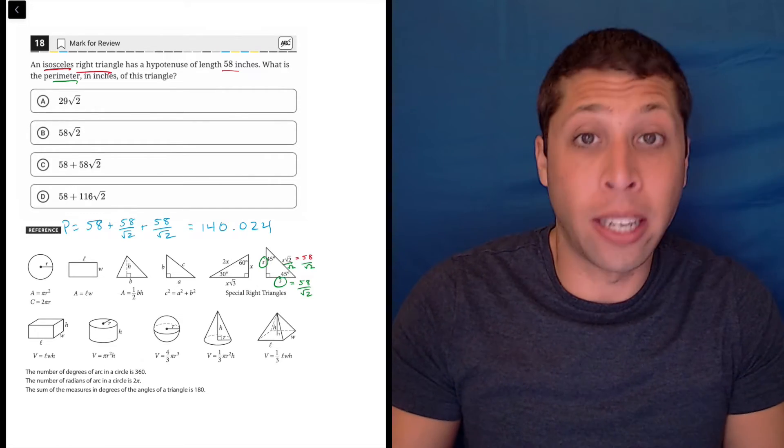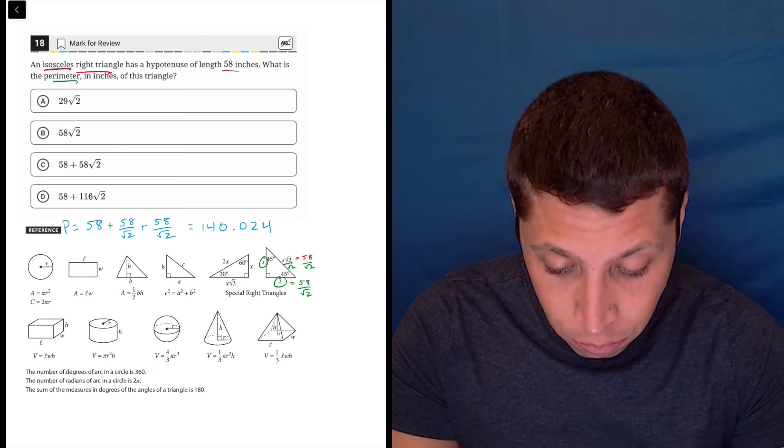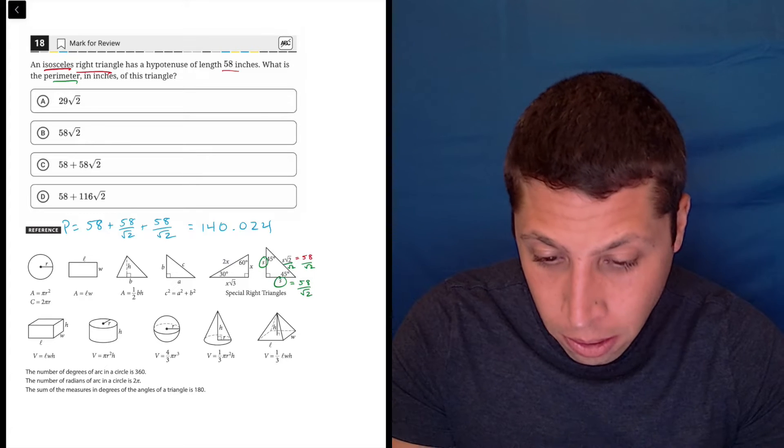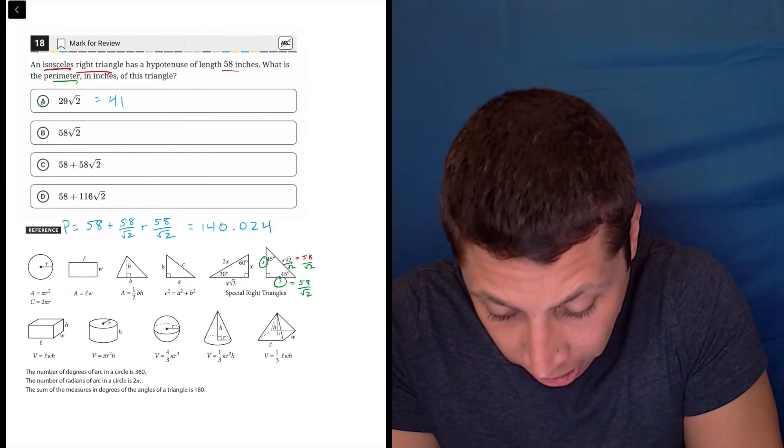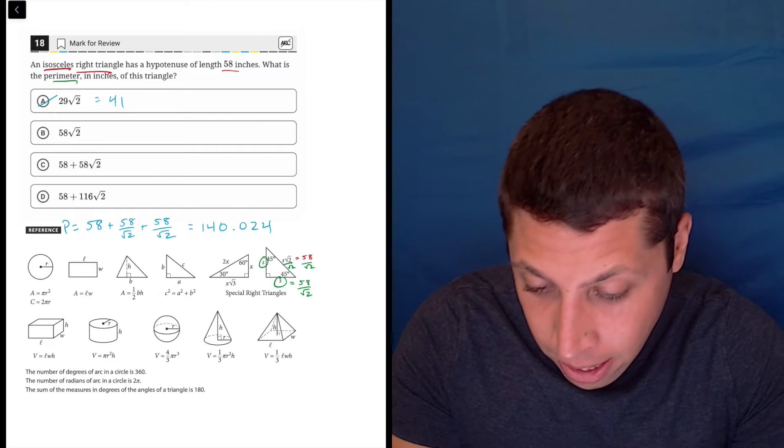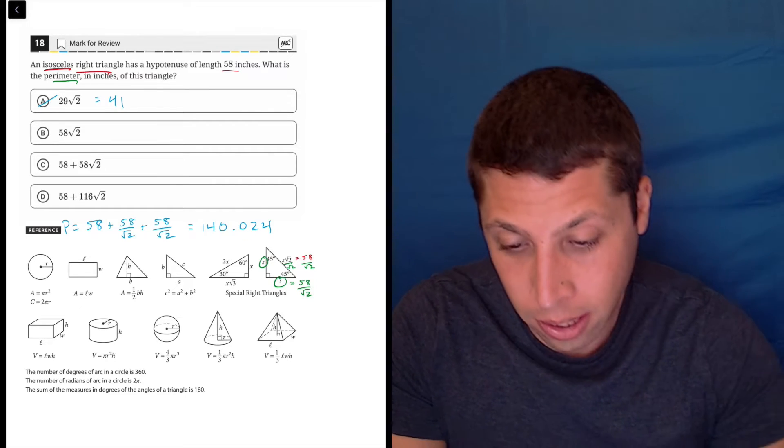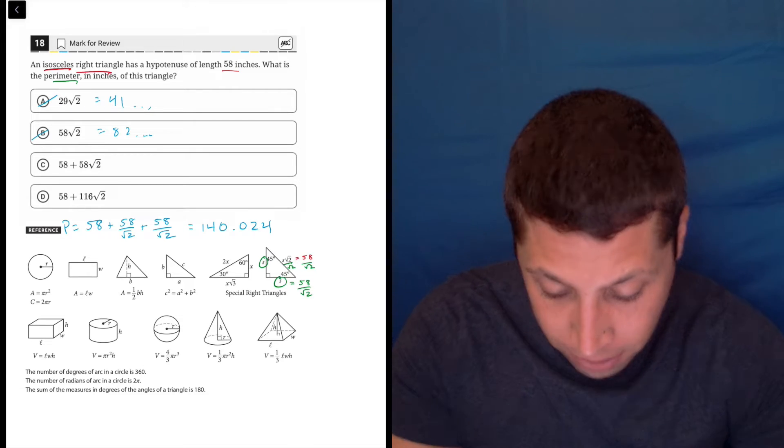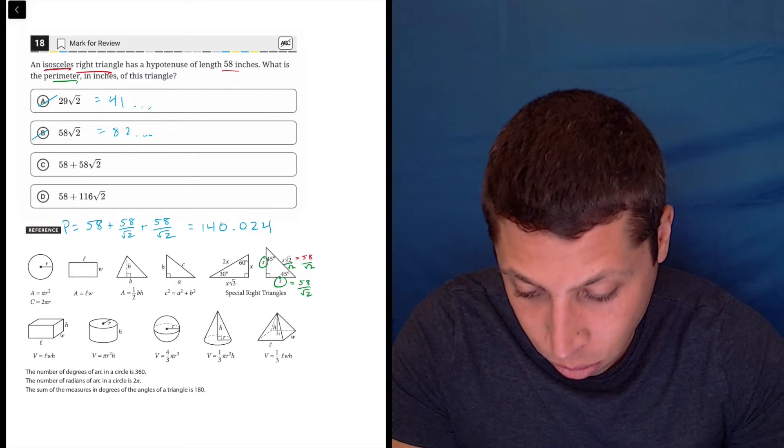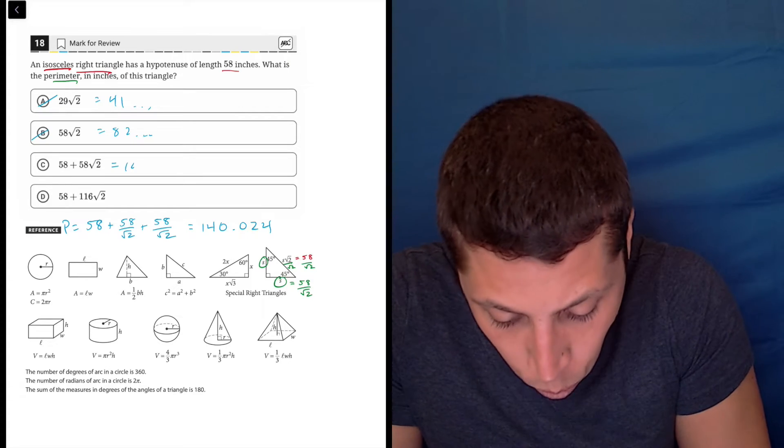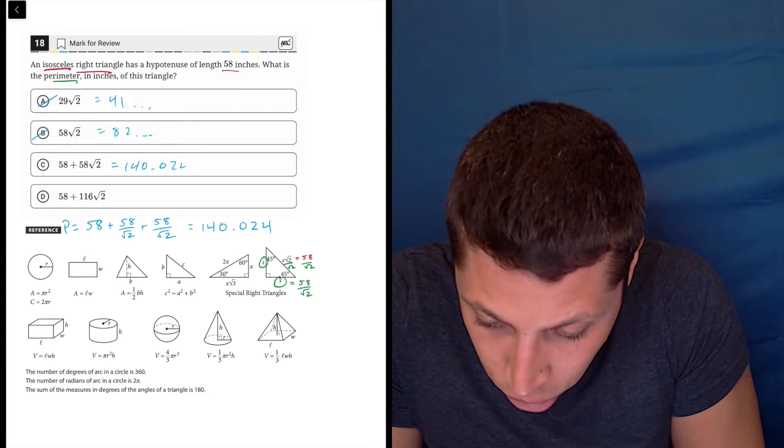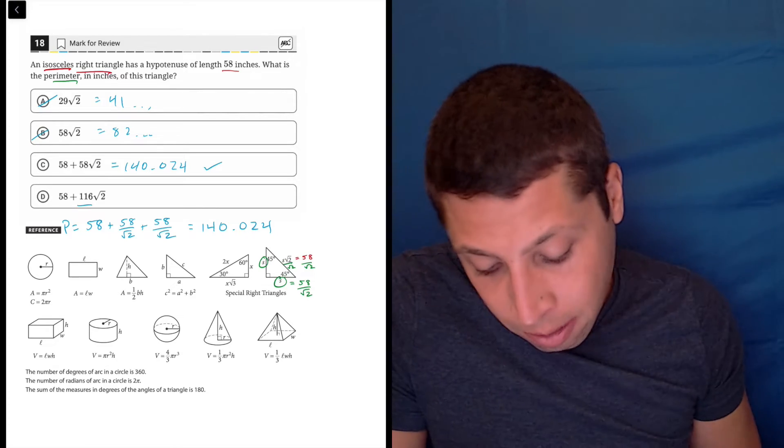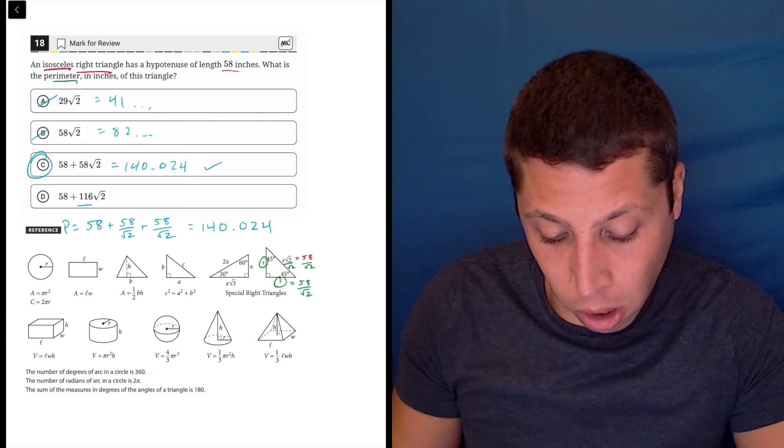Now, one of these is going to equal 140.024, so 29 root 2, root 2 is 41 and some change, so that's not right, 58 root 2 is 82 and some change, so that's not right, 58 plus 58 square root 2 is 140.0243, et cetera. So that's going to be it. I can already just tell because this number is bigger, that c is the only one that's going to work, and that is the answer.